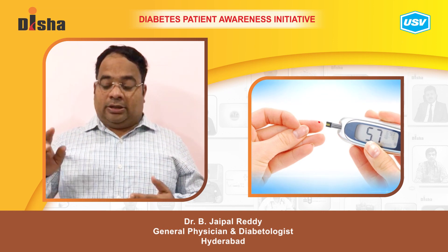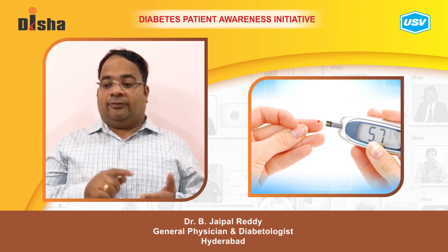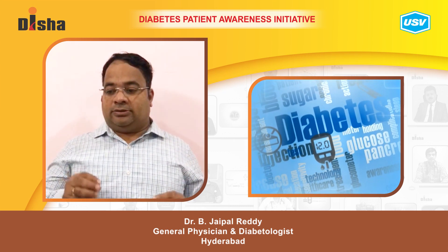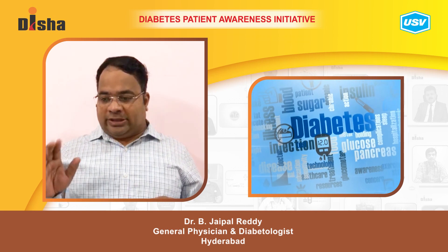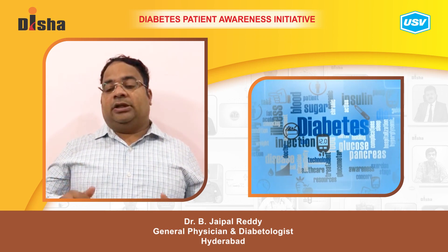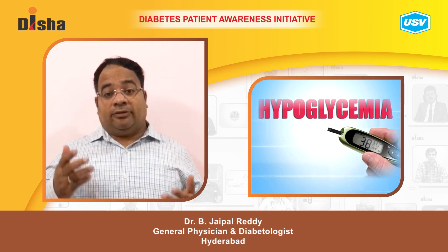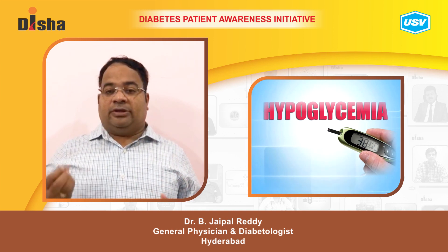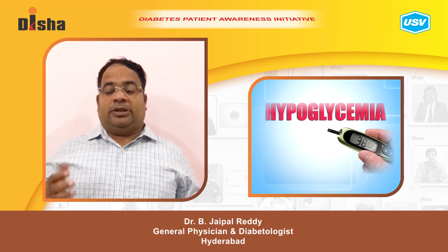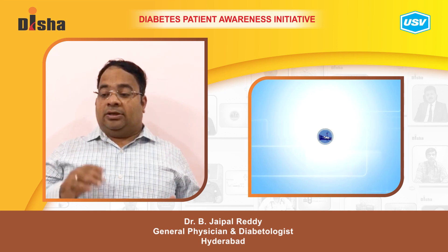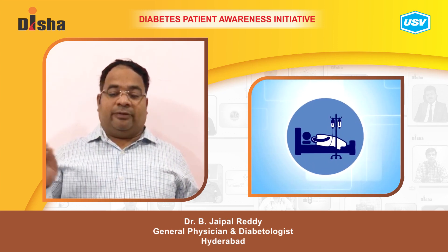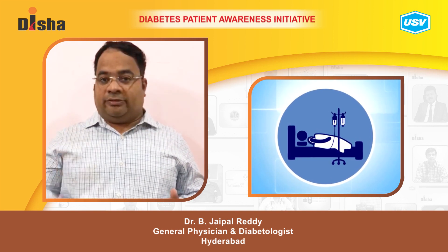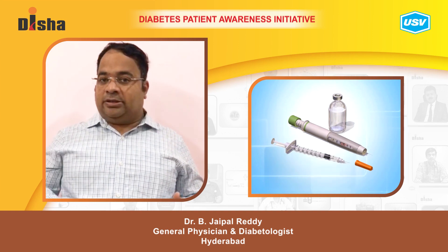Check glucose one hour after hypoglycemia as well. If the patient is taking sulfonylureas, hypoglycemia can persist for 48 to 72 hours because the drug is continuously delivered from lipid stores into the circulation. Therefore, any patient on sulfonylureas experiencing hypoglycemia should be admitted and blood sugars checked regularly for 48 to 72 hours.